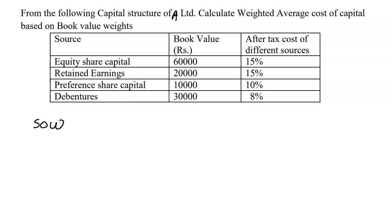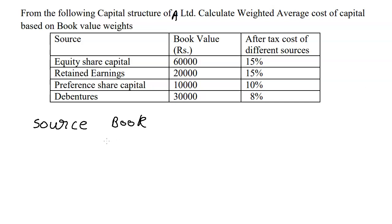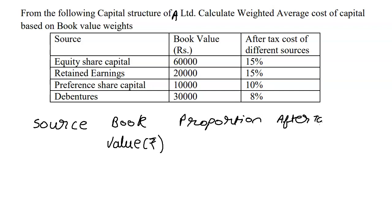We need to make a table with an extra column on the right-hand side. We have: source, book value in terms of rupees, then proportion, after-tax cost of capital, and then weighted cost.